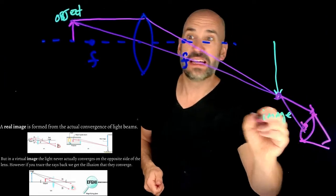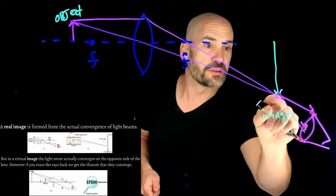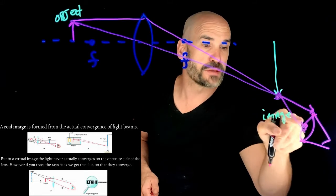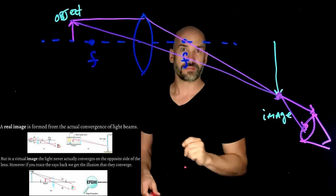It's kind of cool. This lens just created the illusion that there is light radiating from this point and not that point.